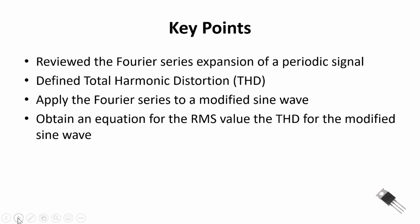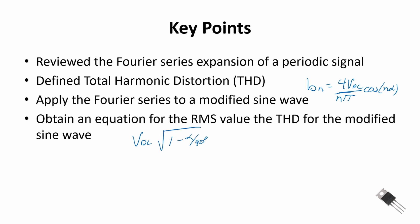To review the key points: we reviewed the Fourier series expansion for a periodic signal; we defined total harmonic distortion as the square root of power in the non-fundamental harmonics over power in the fundamental; we applied the Fourier series to the modified sine wave with coefficients b_n equal to 4·VDC divided by n·π times cosine(n·alpha); we obtained the RMS value as VDC times the square root of (1 minus alpha over 90 degrees), or over π/2 in radians; and finally we obtained the THD equation for the modified sine wave.